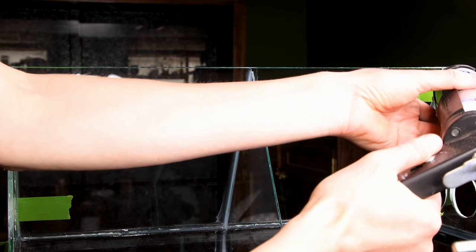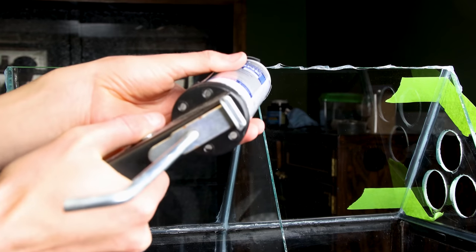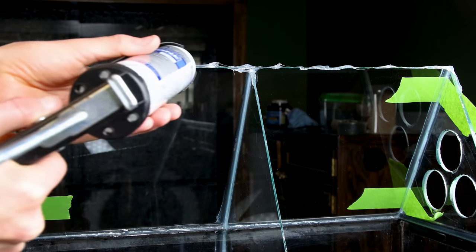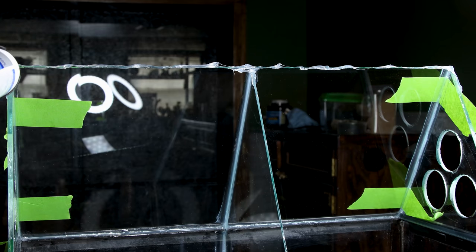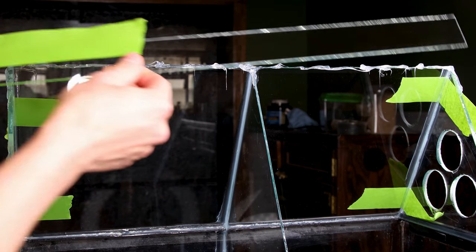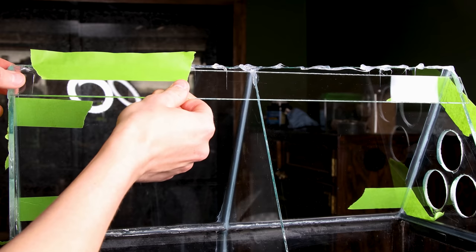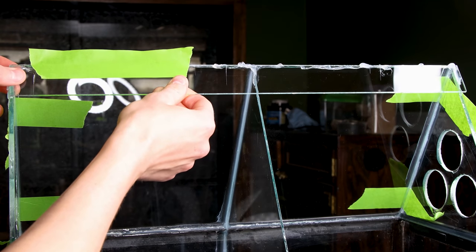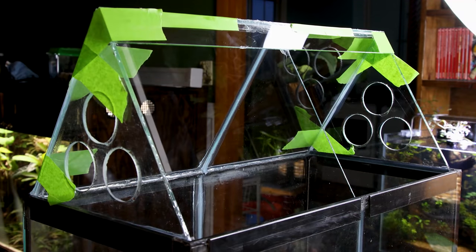I applied silicone to the other side and secured it the same way. After that, I went on to add glass to the front. I put down silicone and aligned a piece of glass accordingly.